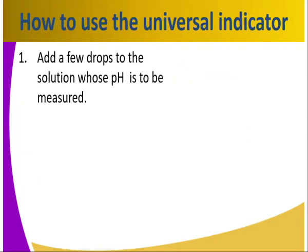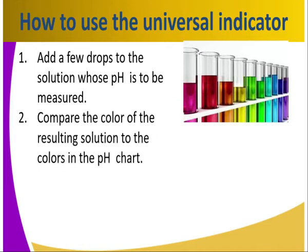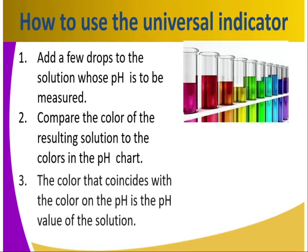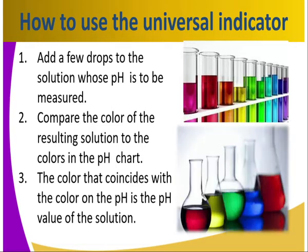How do we use the universal indicator? Add a few drops to the solution whose pH is to be measured. When you add the few drops, the color may change as illustrated by the test tubes that we have there — we have a range of different colors. Then you compare the color of the resulting solution to the colors in the pH chart. The color that coincides with the color on the pH chart is the pH value of the solution.